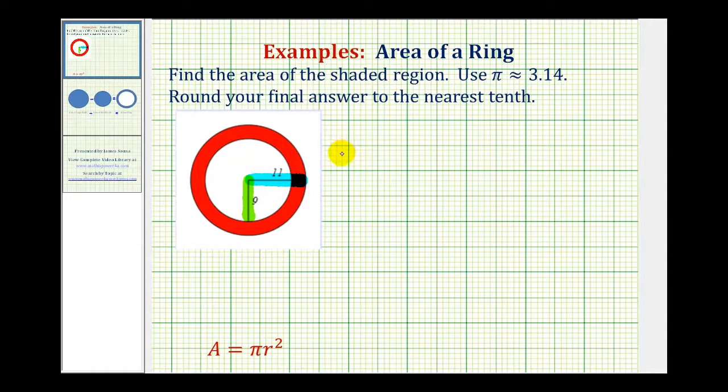So the area of this ring is going to be approximately, because we are rounding pi, the area of the large circle, which is going to be pi, or 3.14, our rounded value, times eleven squared, and then we're going to subtract the area of the small circle, which is going to be approximately 3.14 times nine units squared.